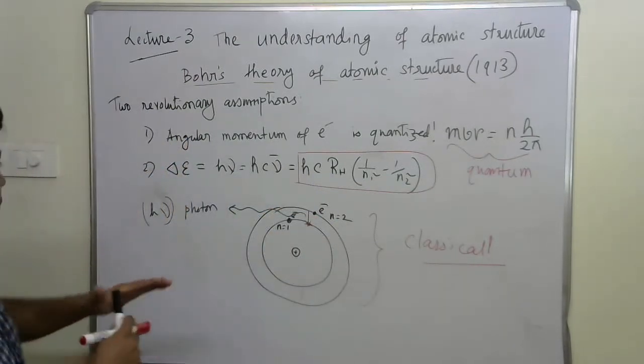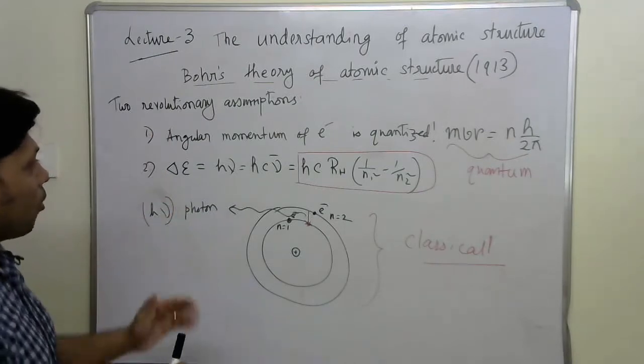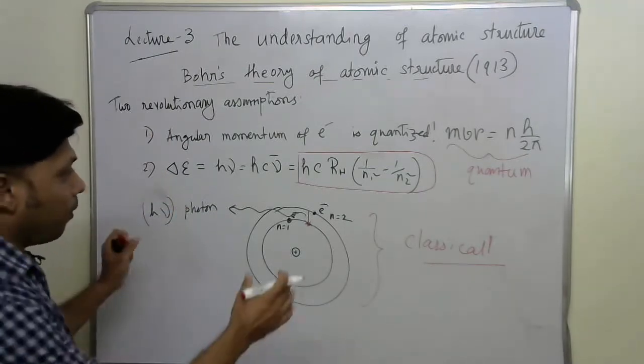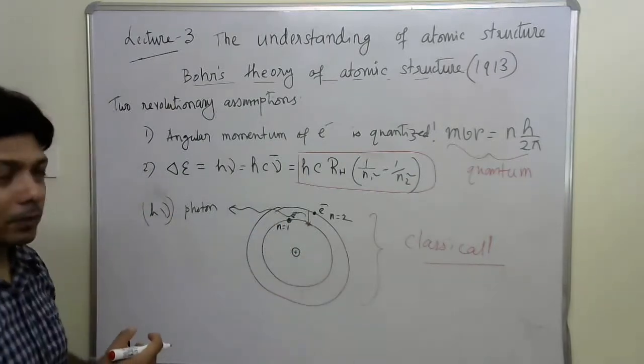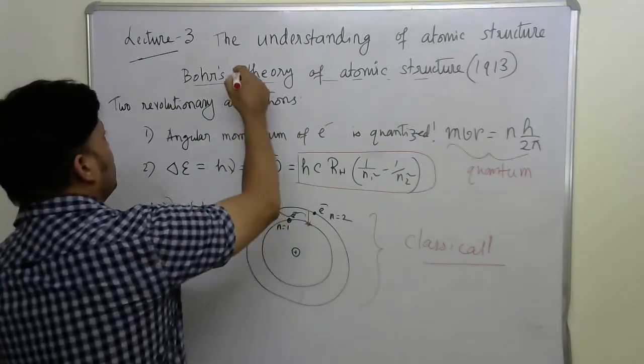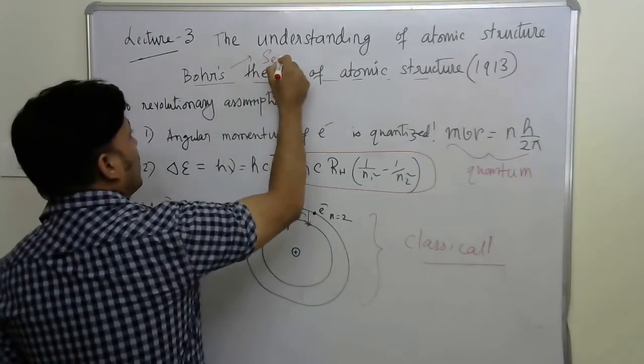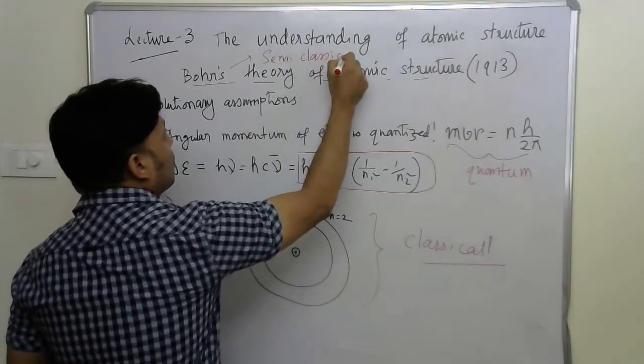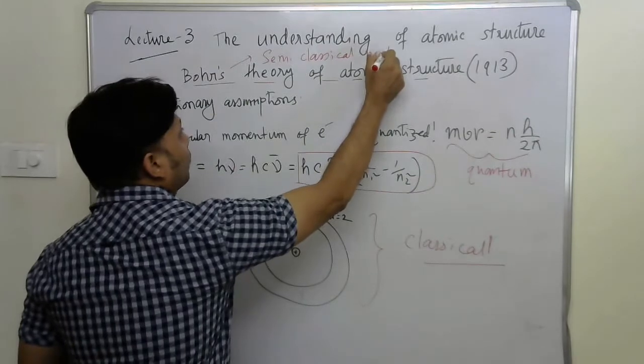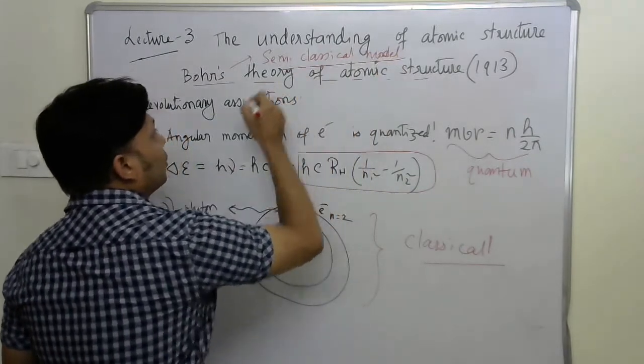Here we can see in the Niels Bohr model, one part is classical, yet one part is quantum. That's why the Niels Bohr theory is known as a semi-classical model of atomic structure. This is not purely quantum.